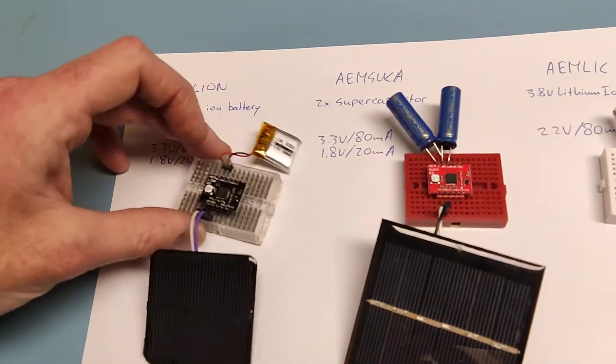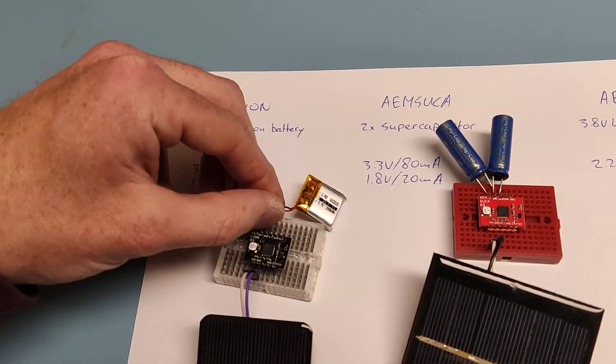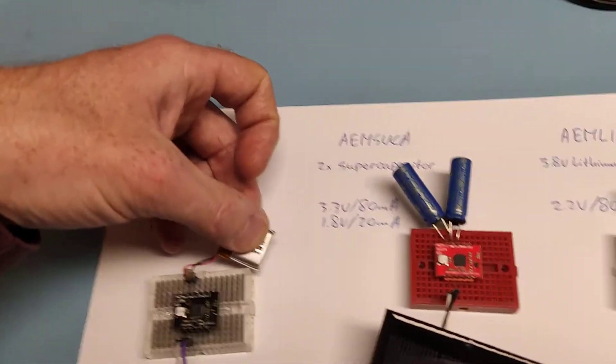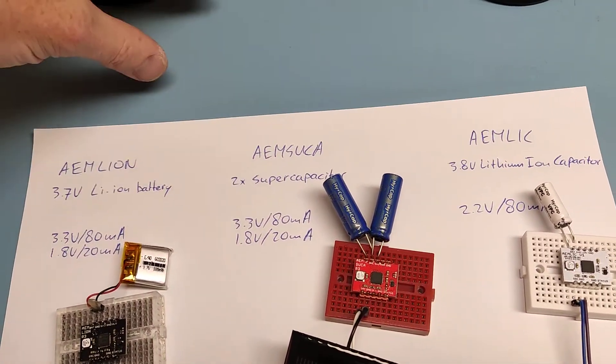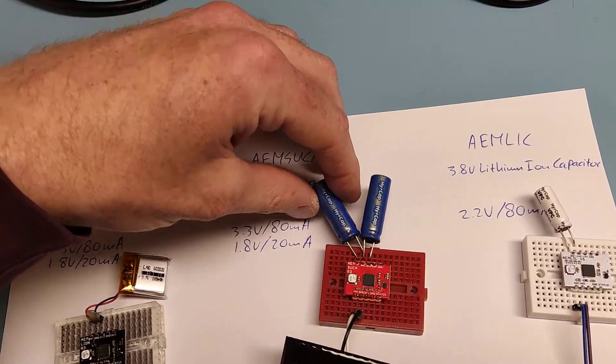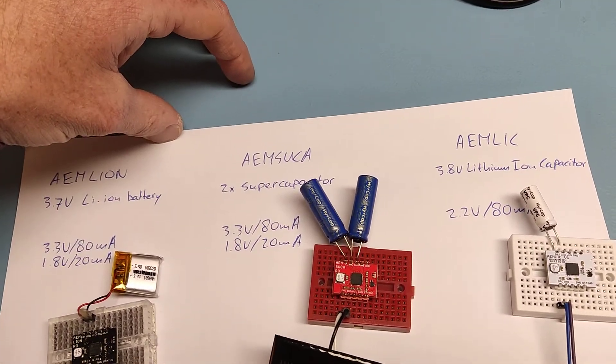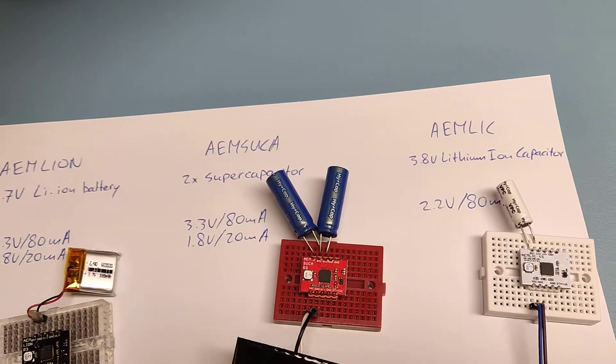The lithium-ion battery has the highest energy density, so the battery is the smallest. The AEM Suka has the lowest energy density storage unit, and lithium-ion capacitor is somewhere in between.